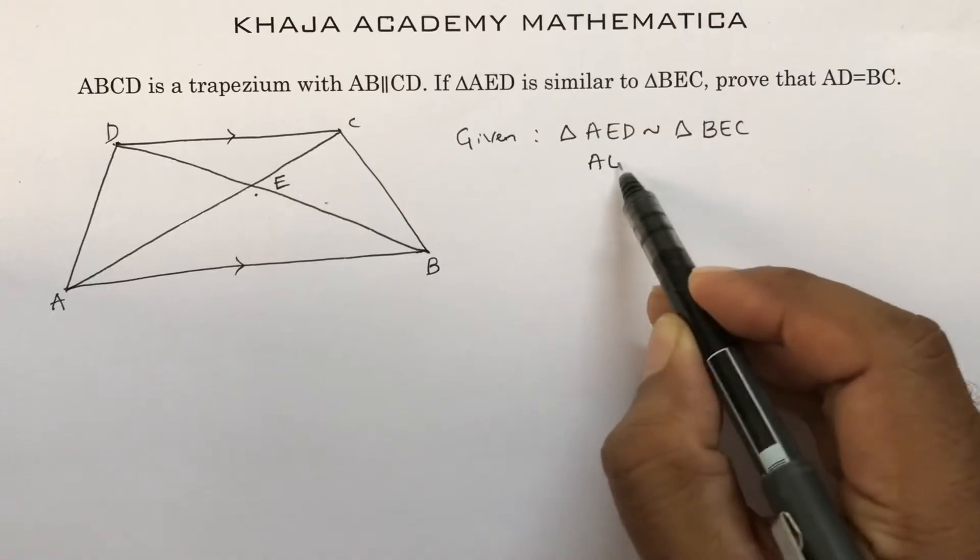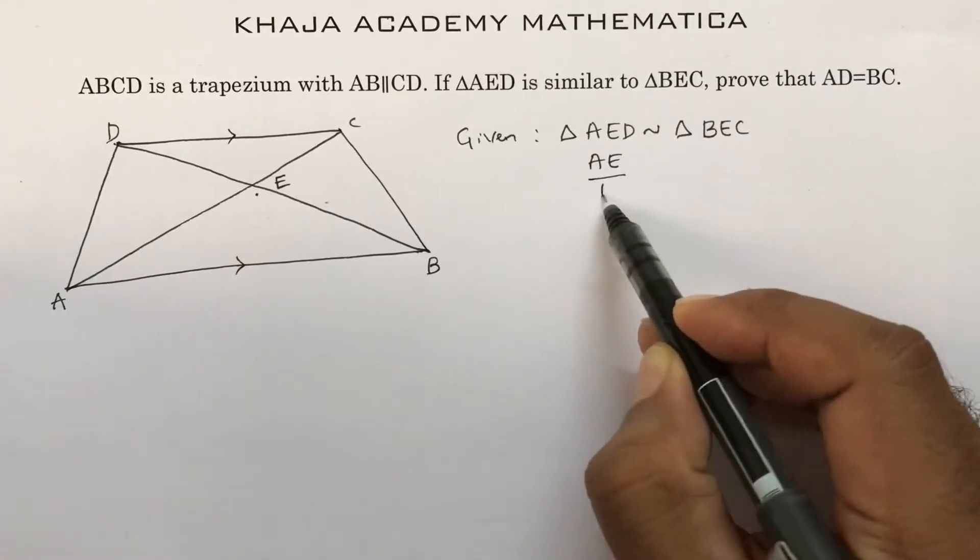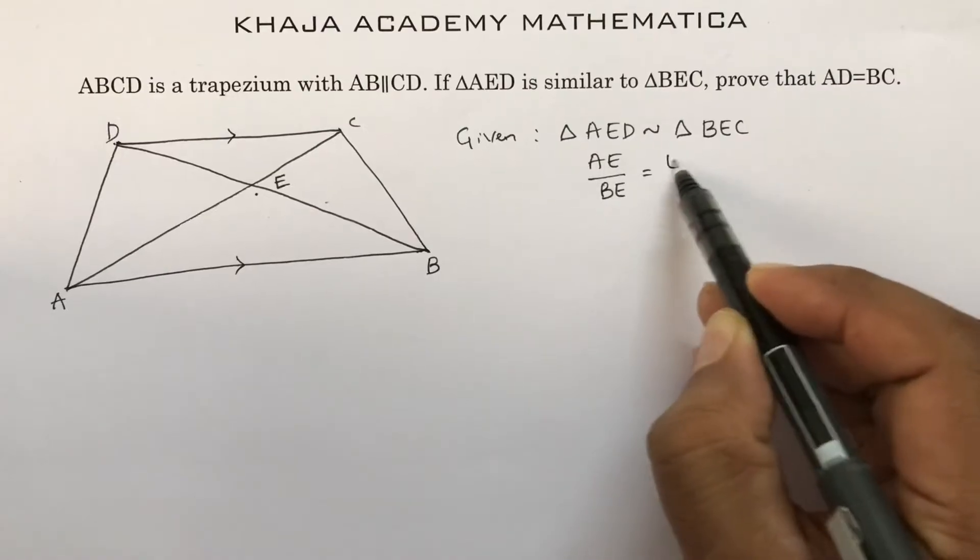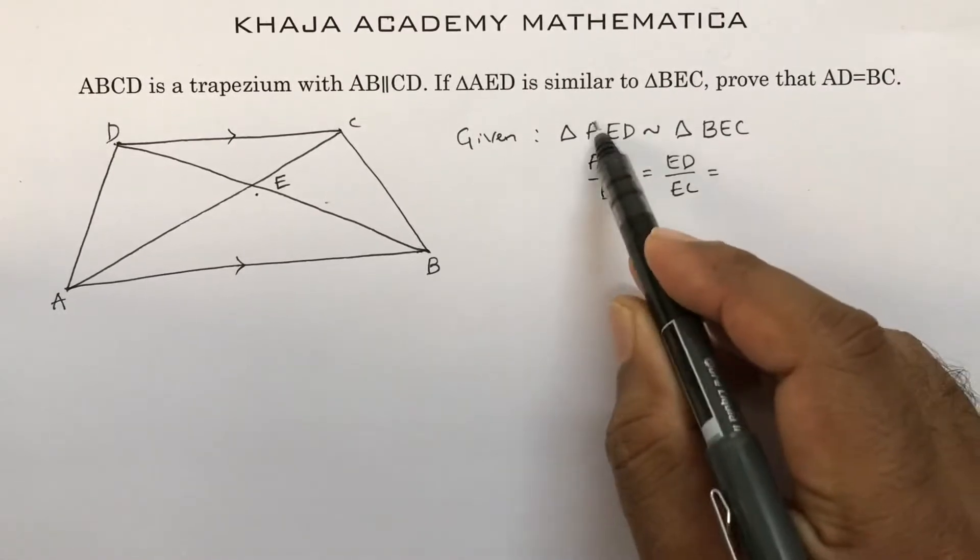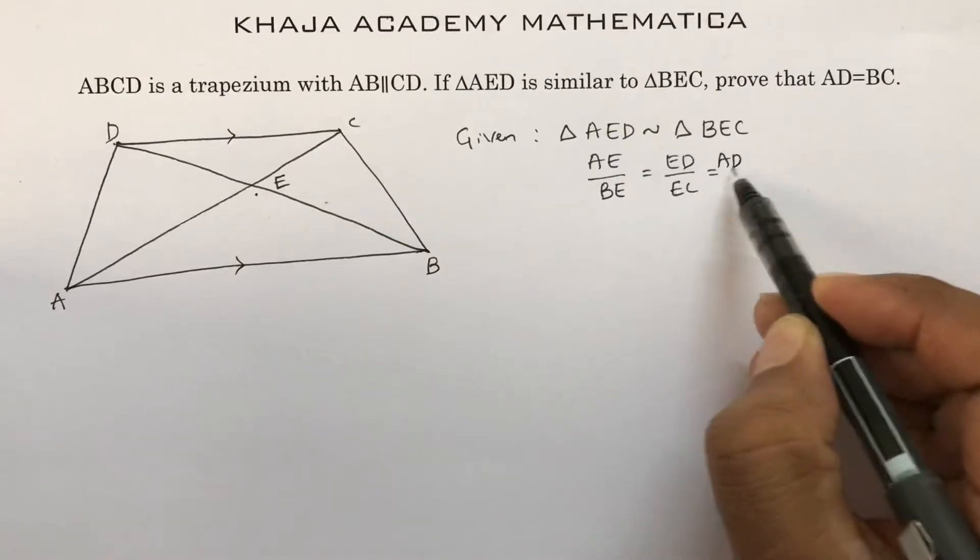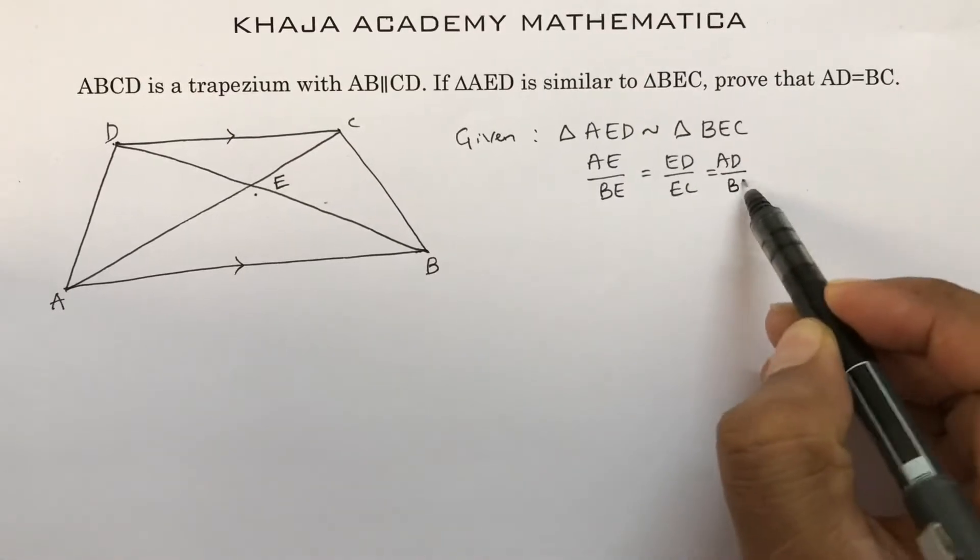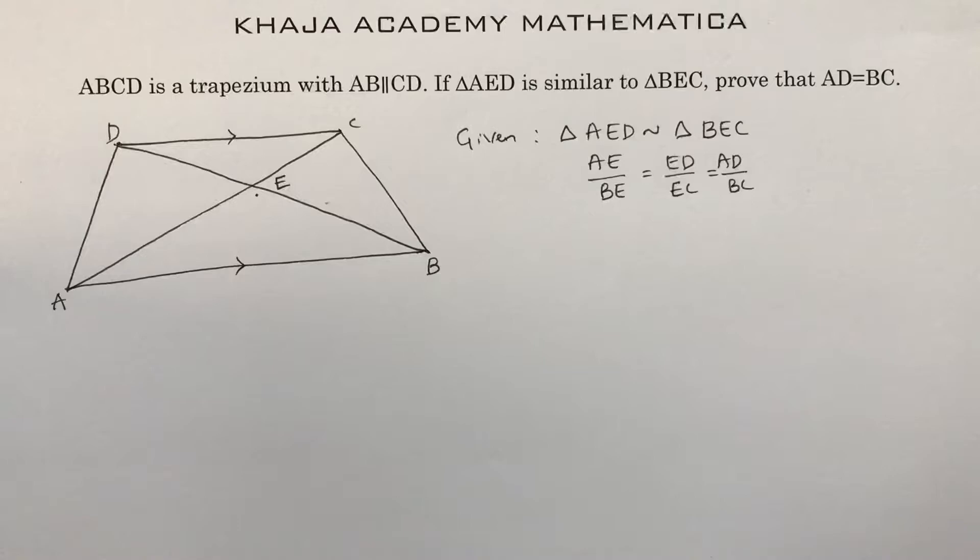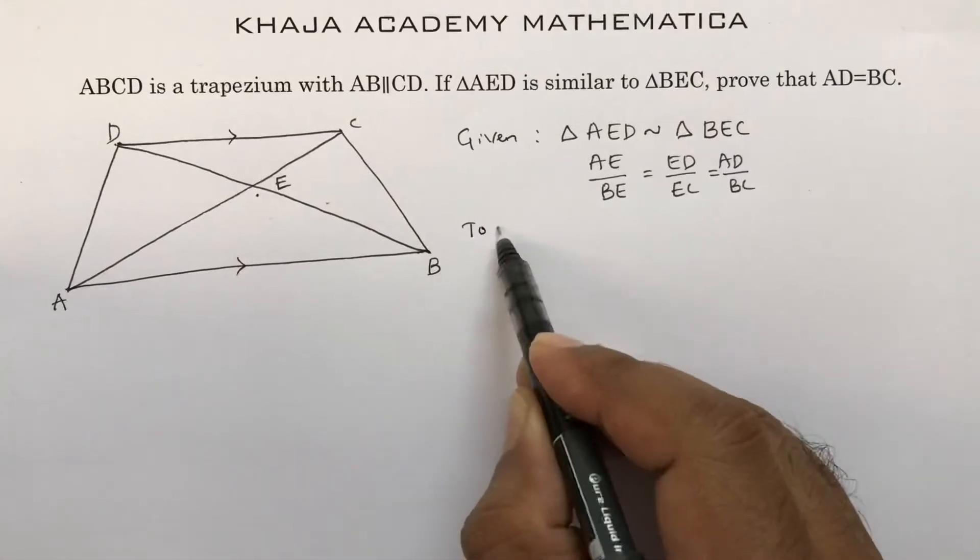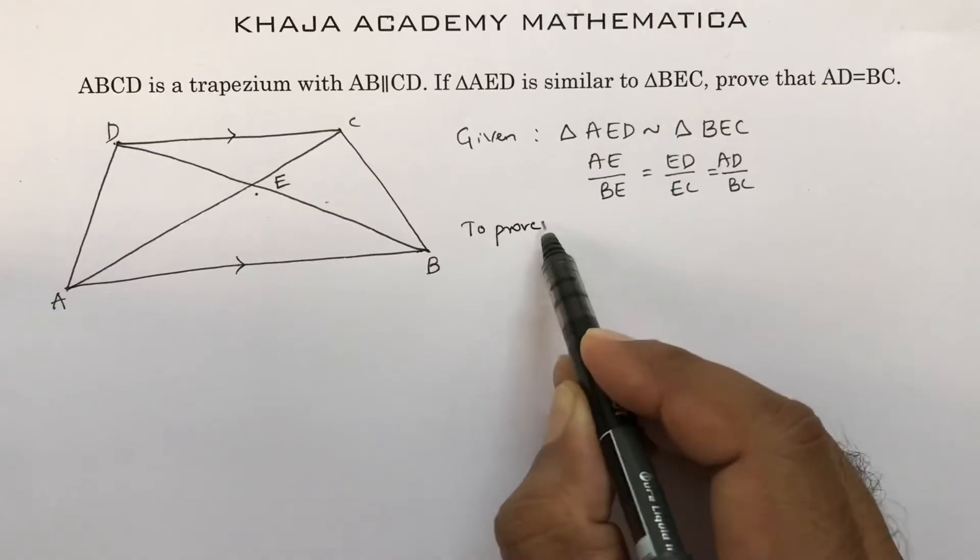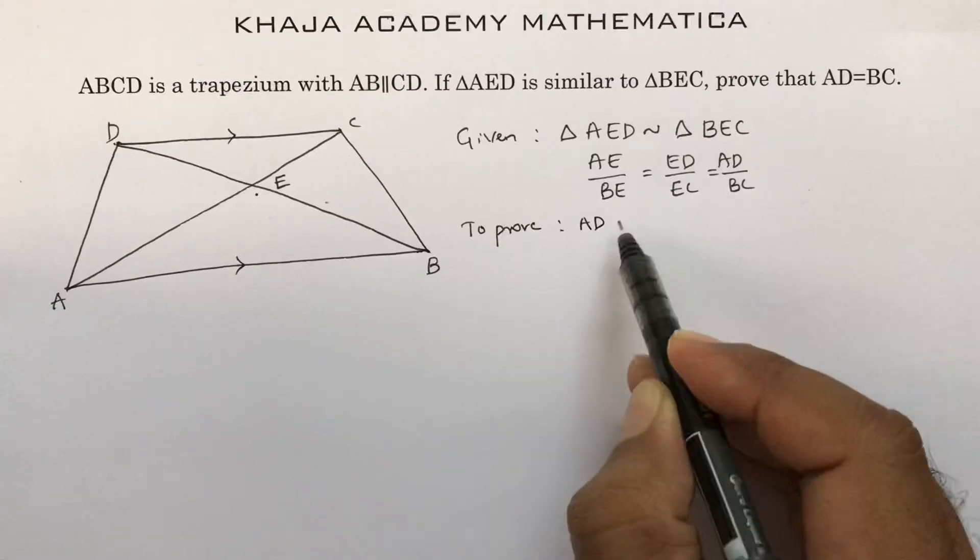So we can write sides AE by BE equals ED by EC, and that equals AD by BC, and corresponding angles also will be equal. Now we need to prove AD equals BC.